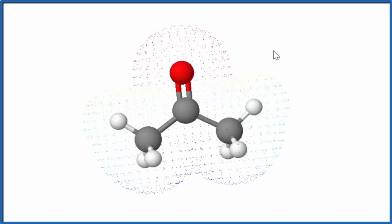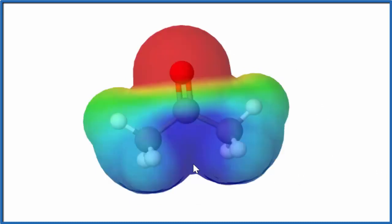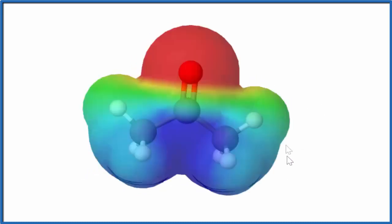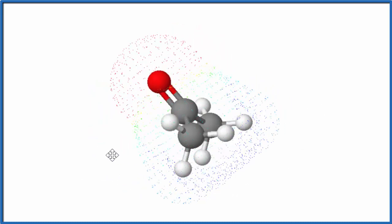That's the more negative side of the molecule. And on the bottom, the blue, where we have these hydrogens and carbons, that's more positive. So we say acetone is a polar molecule.